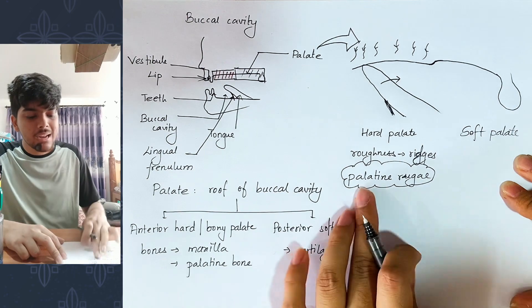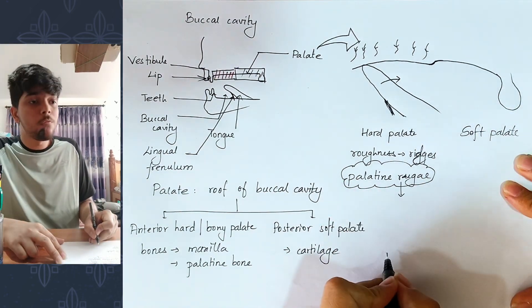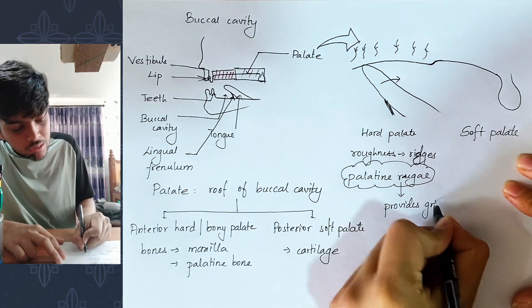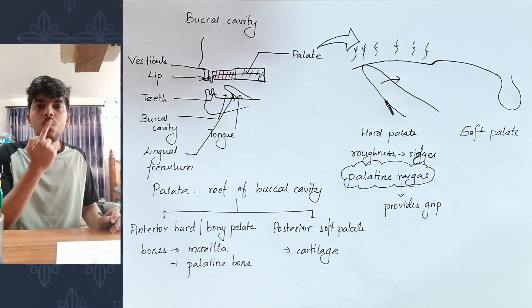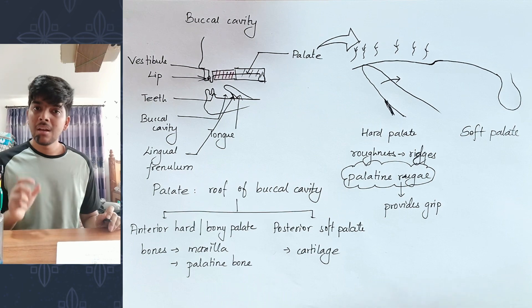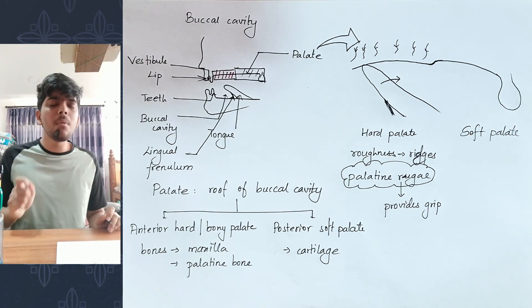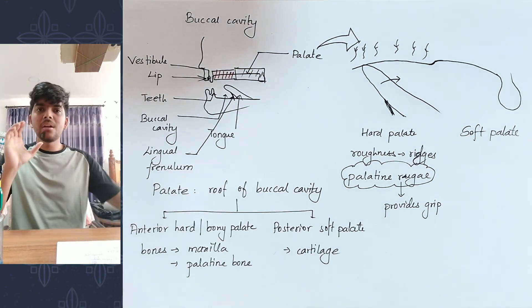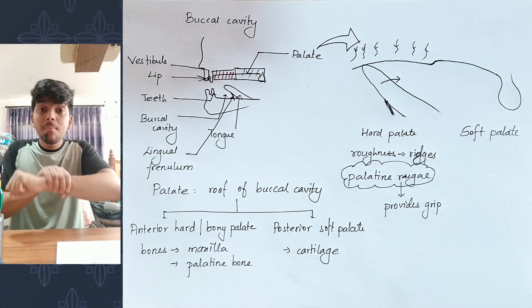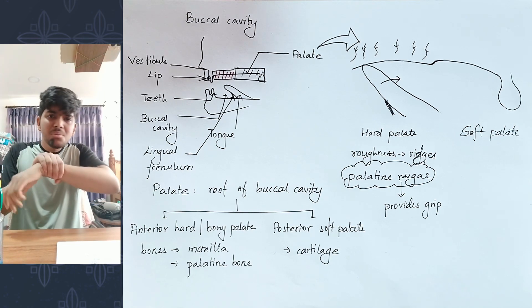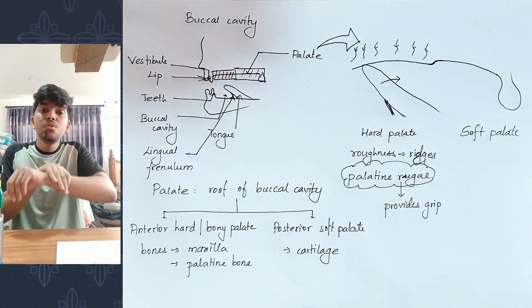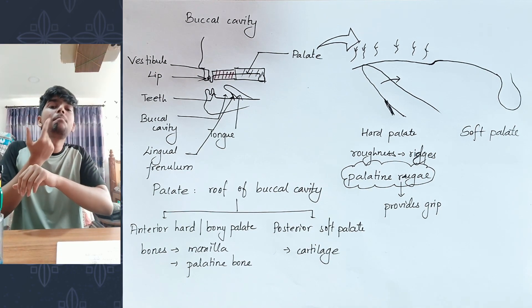These palatine rugae provide grip. Their function is to provide grip. When you are chewing food, the tongue pushes food against the rugae. In animals like tigers, palatine rugae are highly developed — a tiger can grip prey like a deer very firmly because of these rugae.